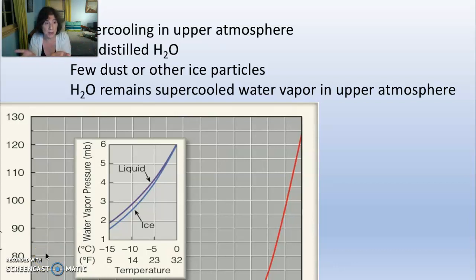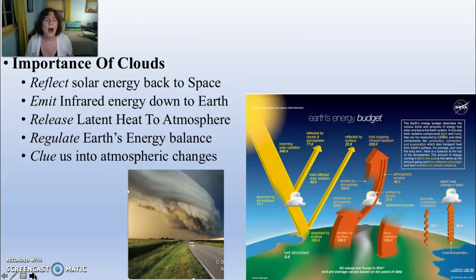Supercooling without those condensation nuclei can happen in your hand warmer, in distilled water, and also in the upper atmosphere because there's not a lot of dust in the upper atmosphere. For that reason, you have supercooled particles in the upper atmosphere that haven't formed a cloud because there's nothing for them to condense onto.